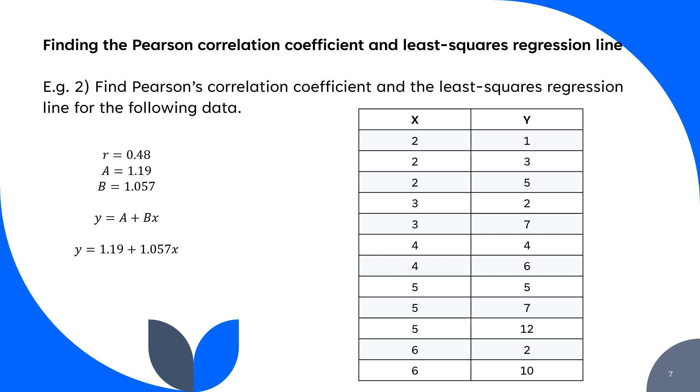The A is 1.19, that's the y-intercept. The gradient is 1.057, emphasizing that it's a positive gradient, and y equals 1.19 plus 1.057x.